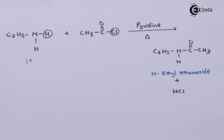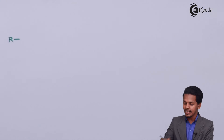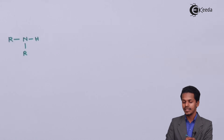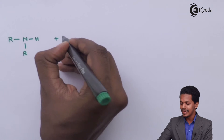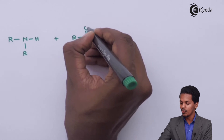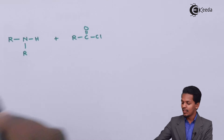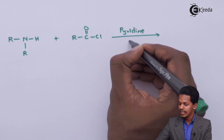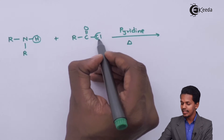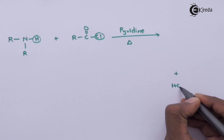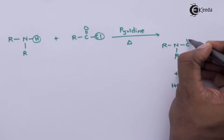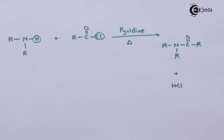Now let's discuss the reaction of a secondary amine with acid chloride. For a secondary amine, written as R–NH–R, if it reacts with acid chloride RCOCl in the presence of pyridine, one hydrogen takes away the Cl to form HCl as a byproduct. The main product is R–N(R)–C=O–R, which is again an amide.